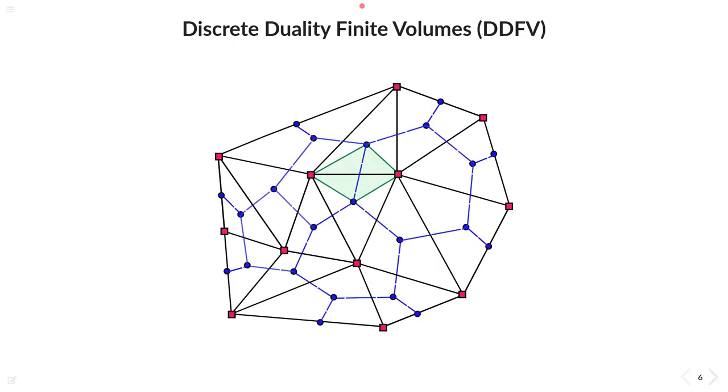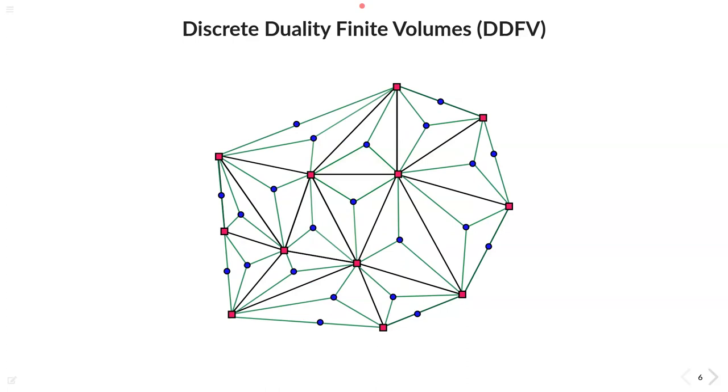Because this method does not require orthogonal edges and uses an alternative type of structure. As you can see here, it forms so-called diamond cells, formed by a primal and a dual edge, and evaluates a local gradient on these quads, dividing the dual and primal constructions into a new so-called diamond mesh.